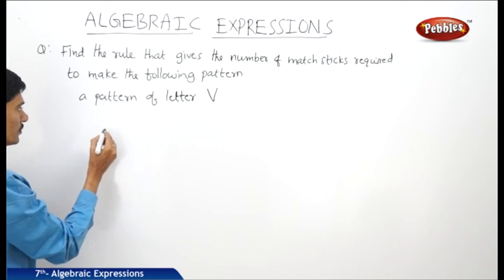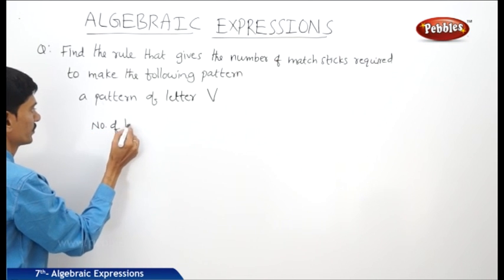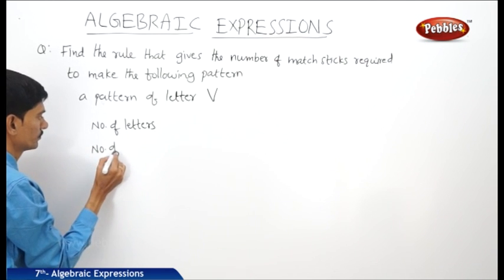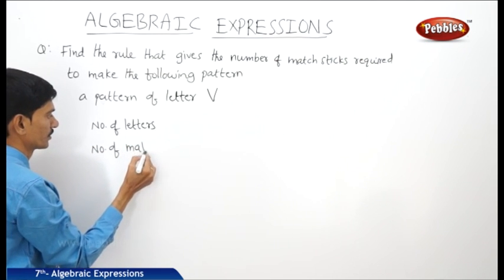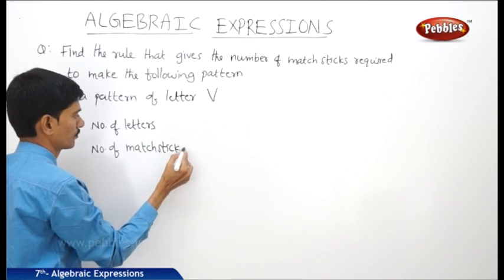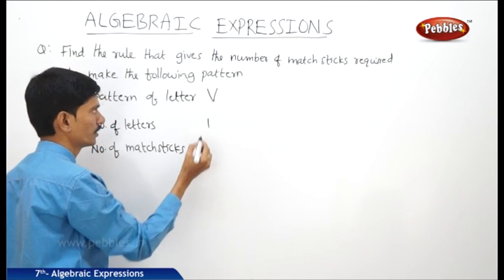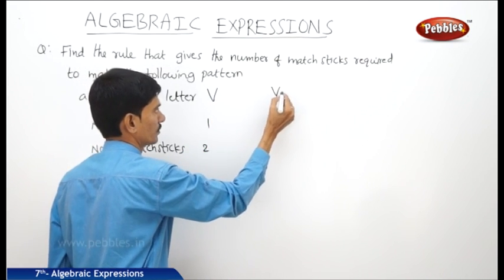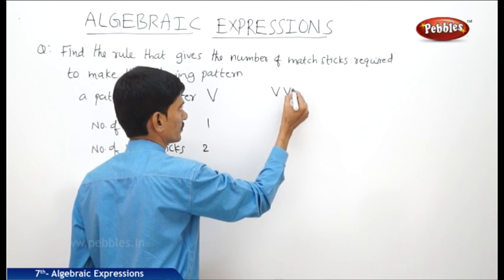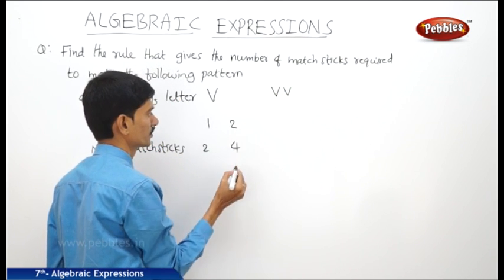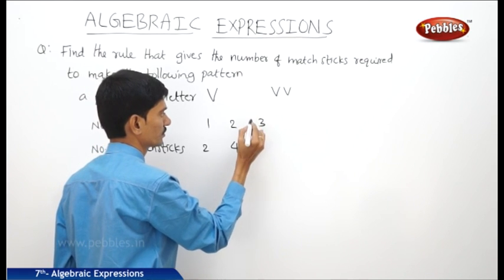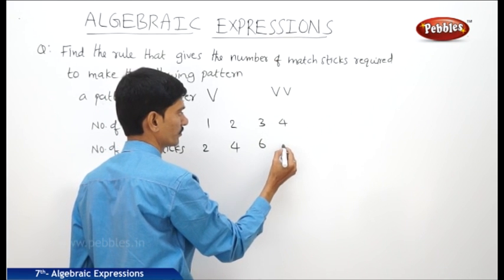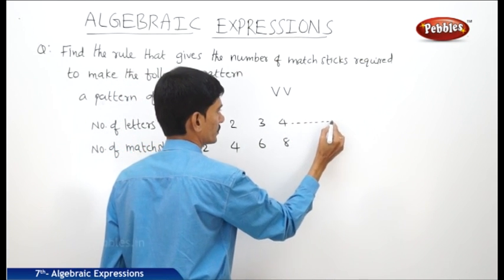Here we take the number of letters, and here we take the number of match sticks. To make one letter V, we need two match sticks. To make two letters, we need four match sticks. To make three letters, we need six match sticks. To make four letters, we need eight match sticks.